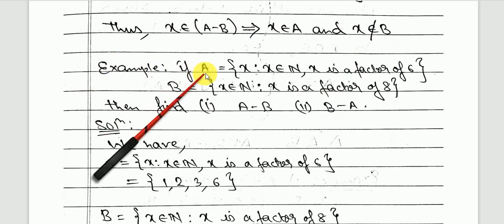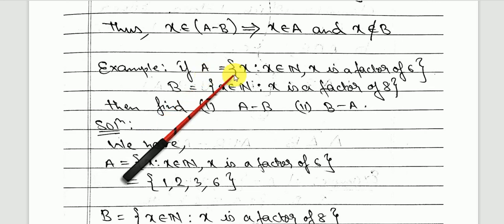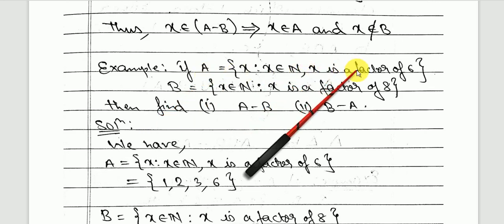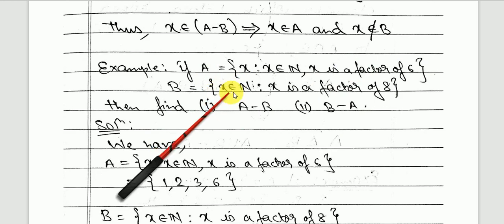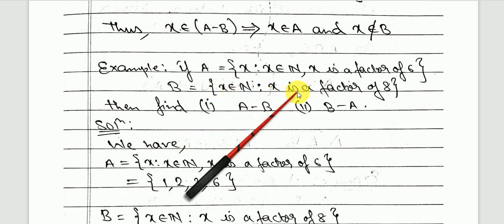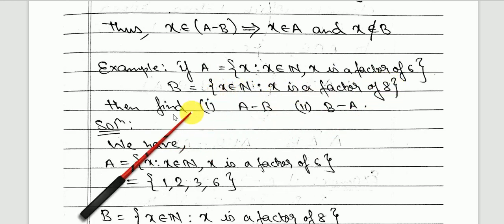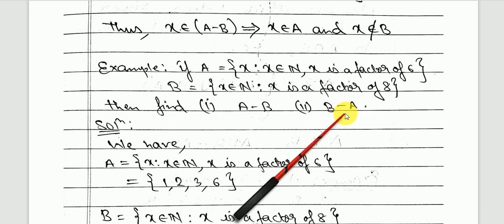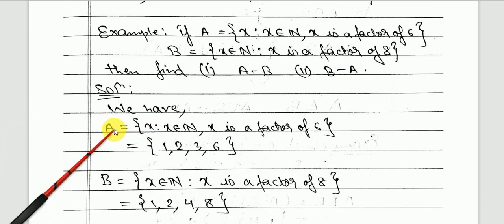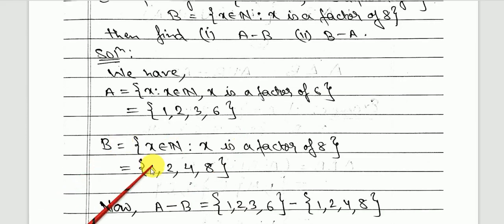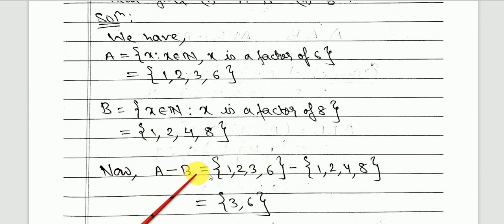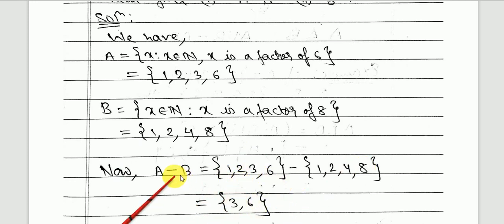Let's see an example. A is the set of natural numbers that are factors of 6, and B is the set of natural numbers that are factors of 8. We have to find A minus B and B minus A. In roster form, A = {1, 2, 3, 6} and B = {1, 2, 4, 8}. For A minus B, we write only elements in A that are not in B.